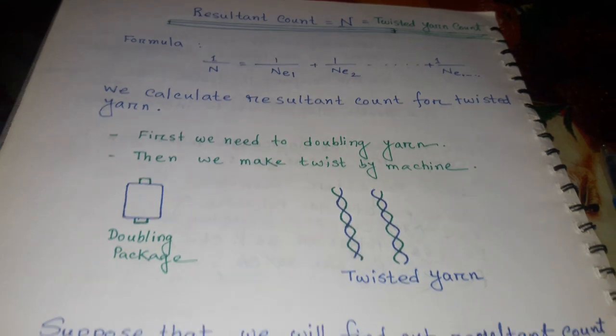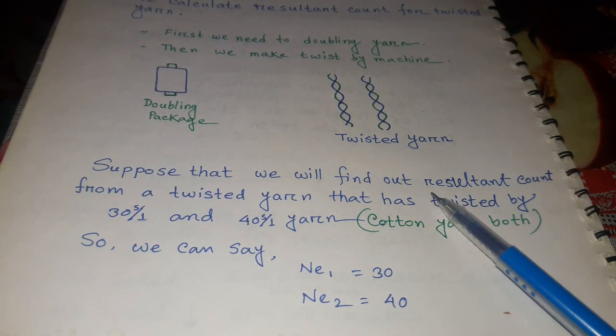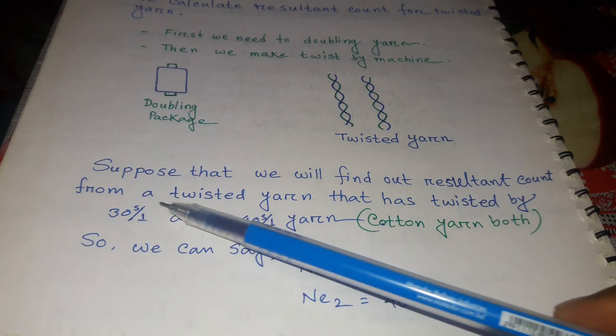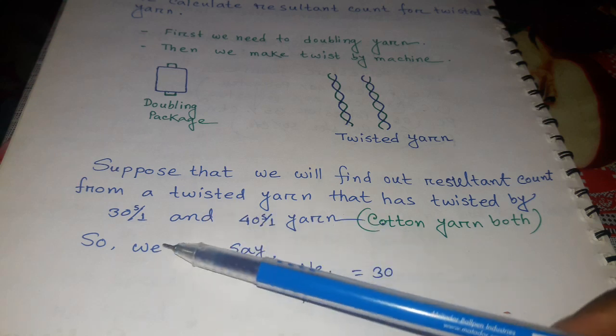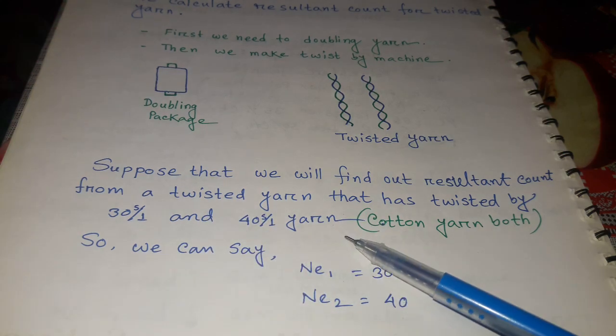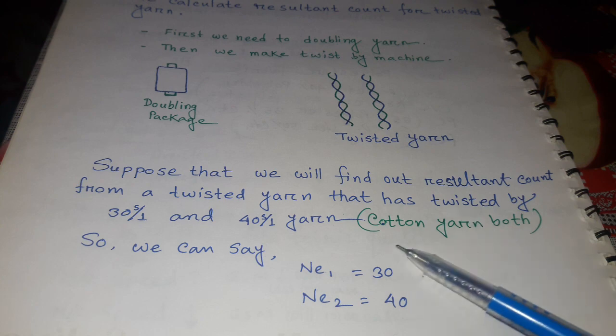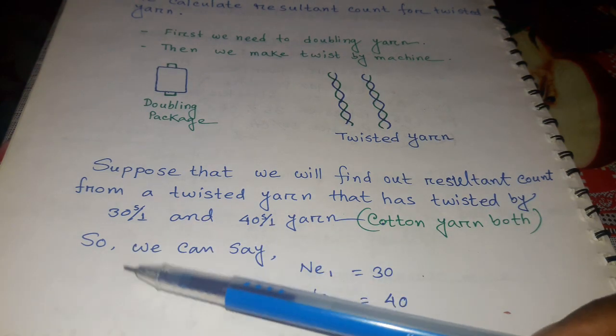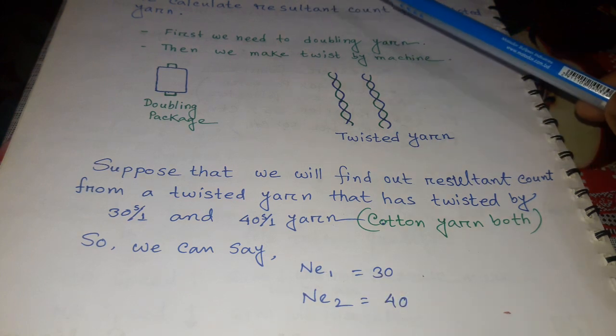Suppose we will find out resultant count from a twisted yarn that has been twisted with 30 single and 40 single cotton yarn. Since both are cotton yarn, we can apply the formula.